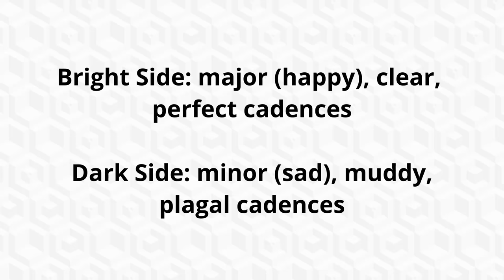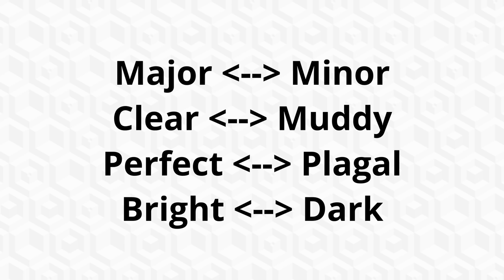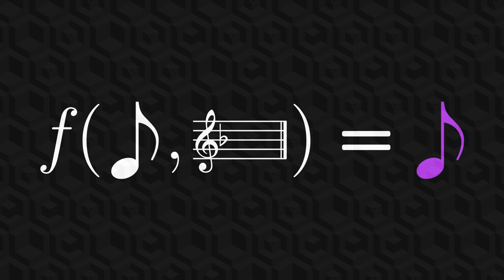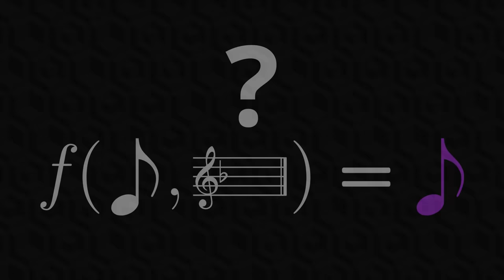The idea of negative harmony is to switch all of these attributes for a given chord. Major becomes minor, clear becomes muddy, perfect becomes plagal, and bright becomes dark. Negative harmony can be thought of as a musical function that takes a note and a key center as inputs and outputs a note. So how is this function defined? How do we actually convert notes, chords, and progressions?